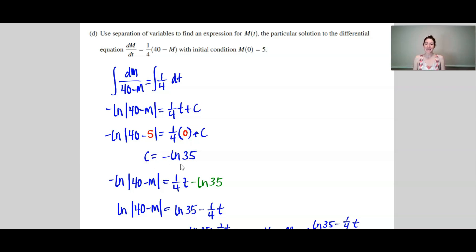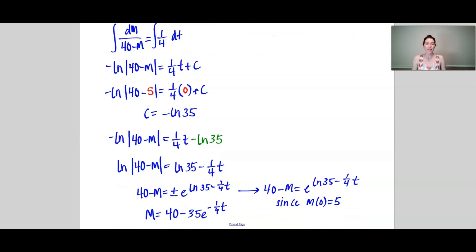So once I calculate C, I get negative natural log of 35. Let's plug that in to this equation right here—the negative natural log of 35 in for my constant. Let's see, what did I do first? I divided everything, both sides, by negative 1.